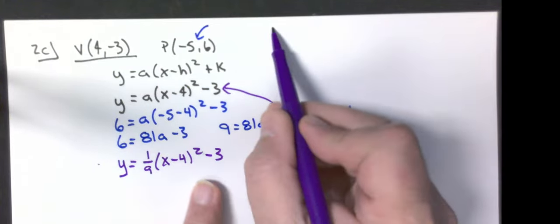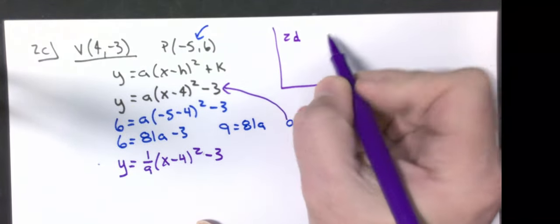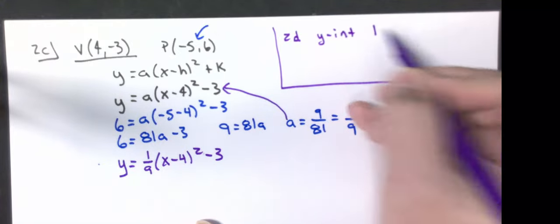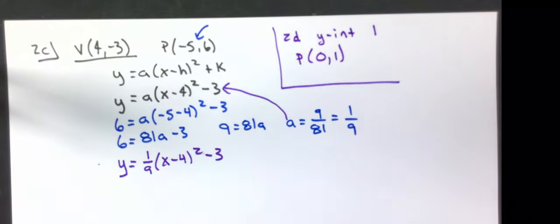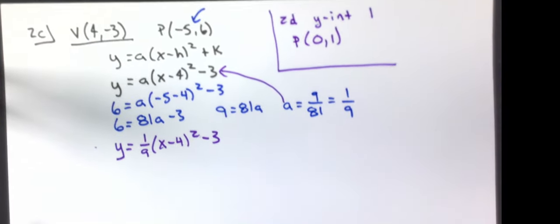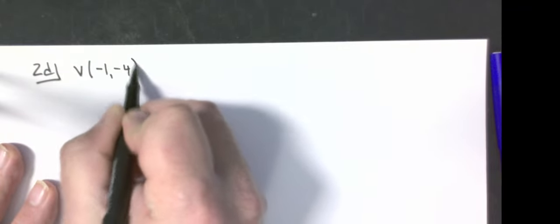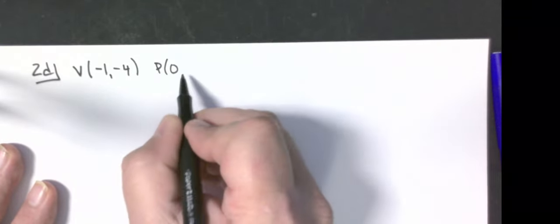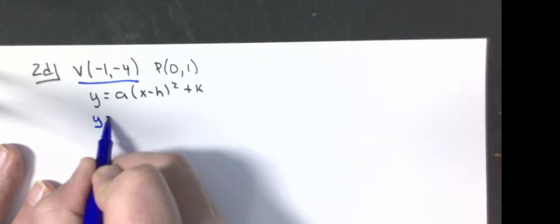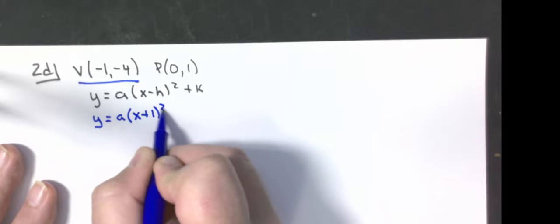For problem 2D, we approach it the same way. They give us a vertex at (-1, -4) and tell us the y-intercept is 1 — meaning our point is (0, 1). Using the vertex, I set up y equals a times x plus 1 squared, minus 4.